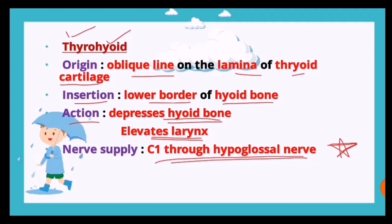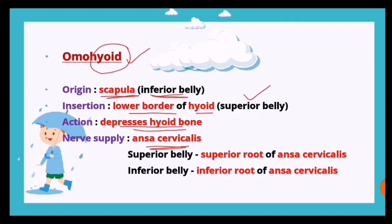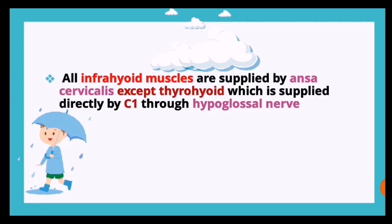The omohyoid: origin is the scapula via the inferior belly, insertion is the lower border of the hyoid bone via the superior belly, and action is to depress the hyoid bone. The nerve supply is the ansa cervicalis - the superior belly by the superior root and the inferior belly by the inferior root of ansa cervicalis.